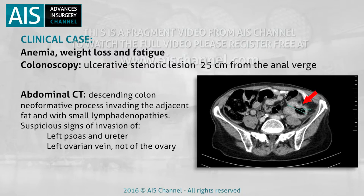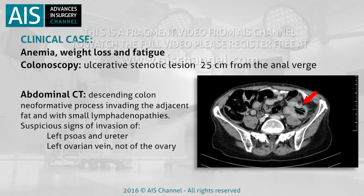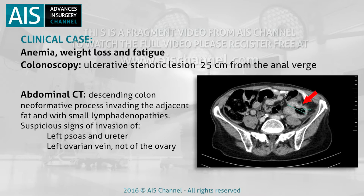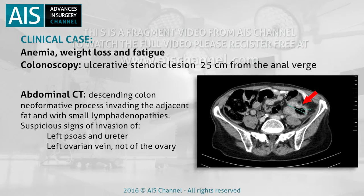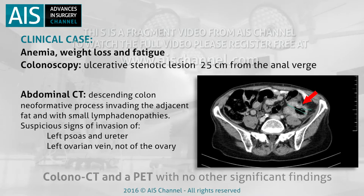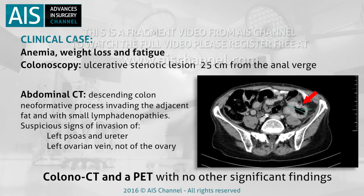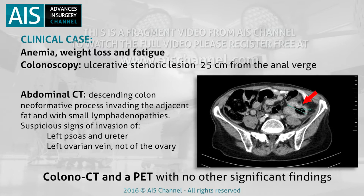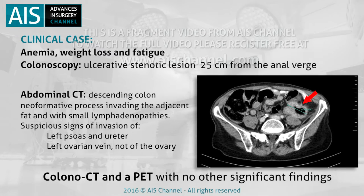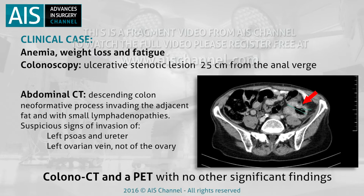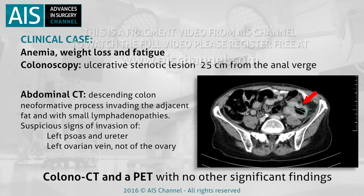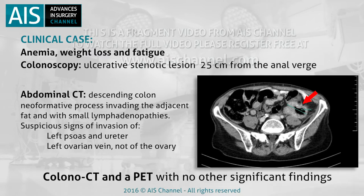There were suspicious signs of invasion of the left psoas muscle, in contact with the left ureter as it crosses the iliac vessels without dilating. Invasion of the left ovarian vein was found, but not of the ovary. The study was completed with a colonoscopy and a PET scan with no other significant findings. It was decided to place a pigtail catheter in the left ureter 24 hours before surgery to help with its location and avoid injuries.